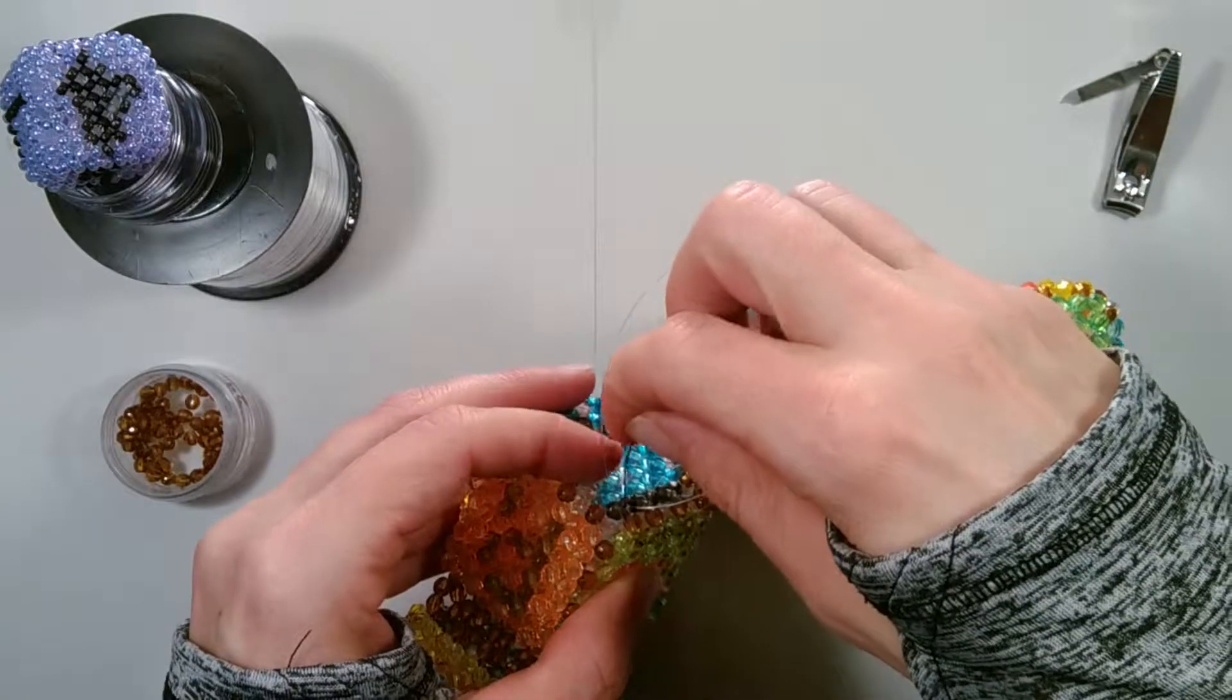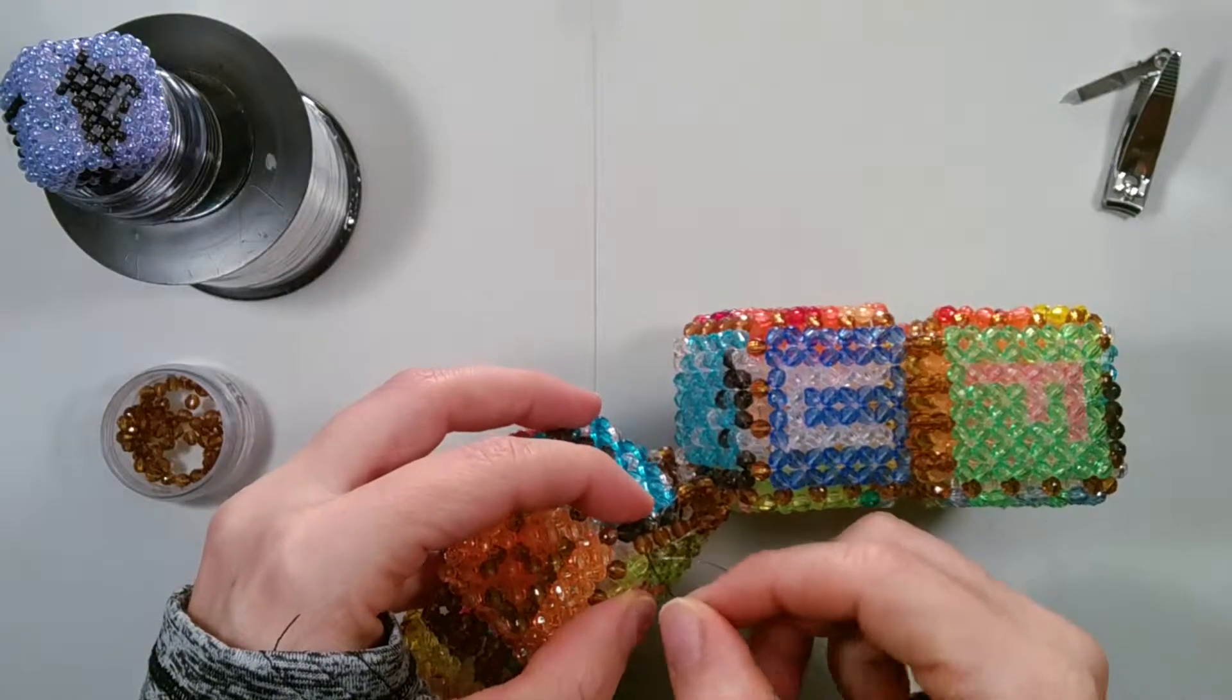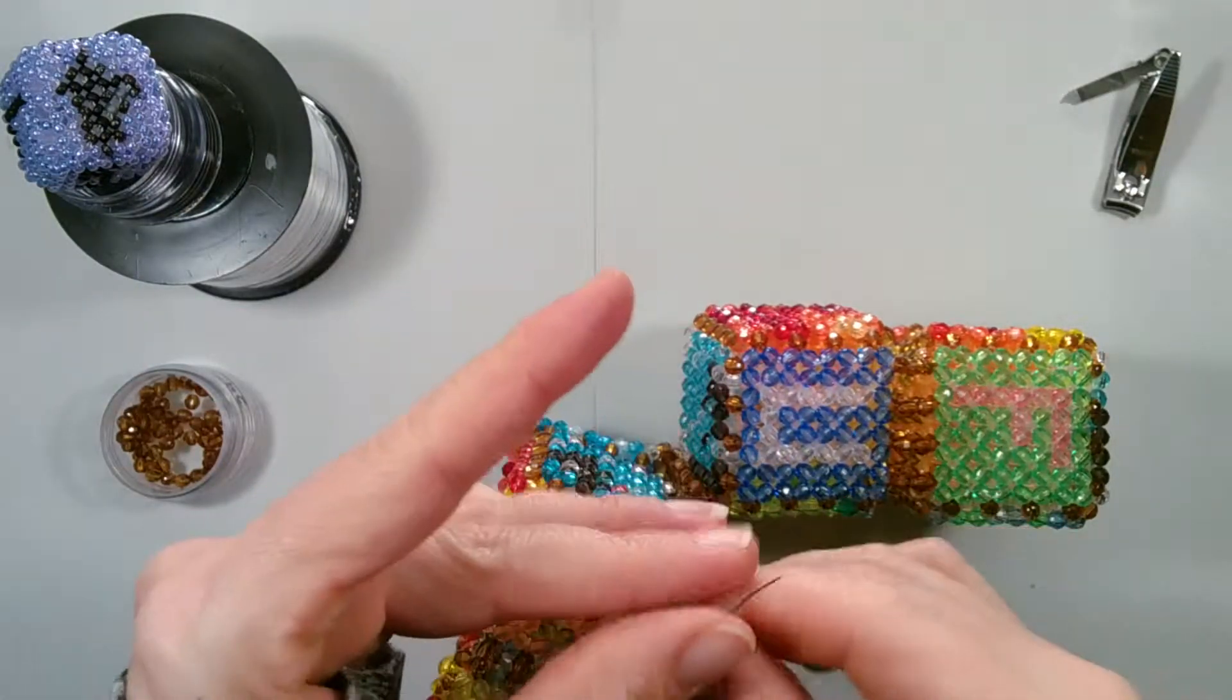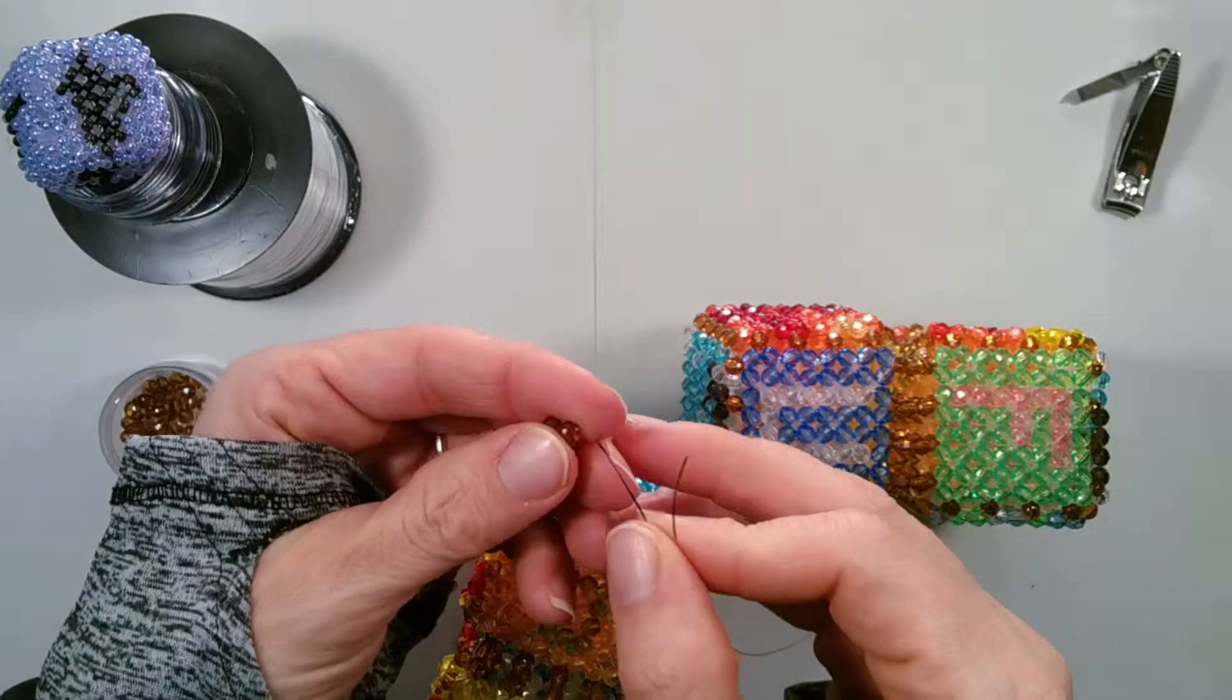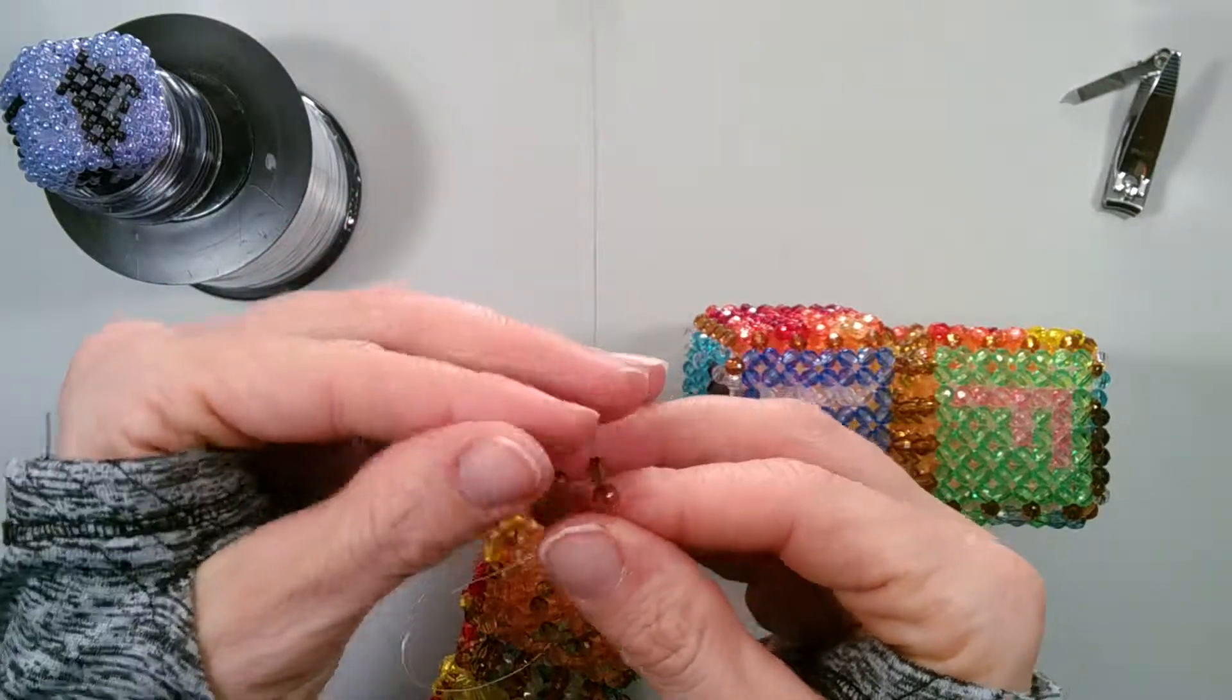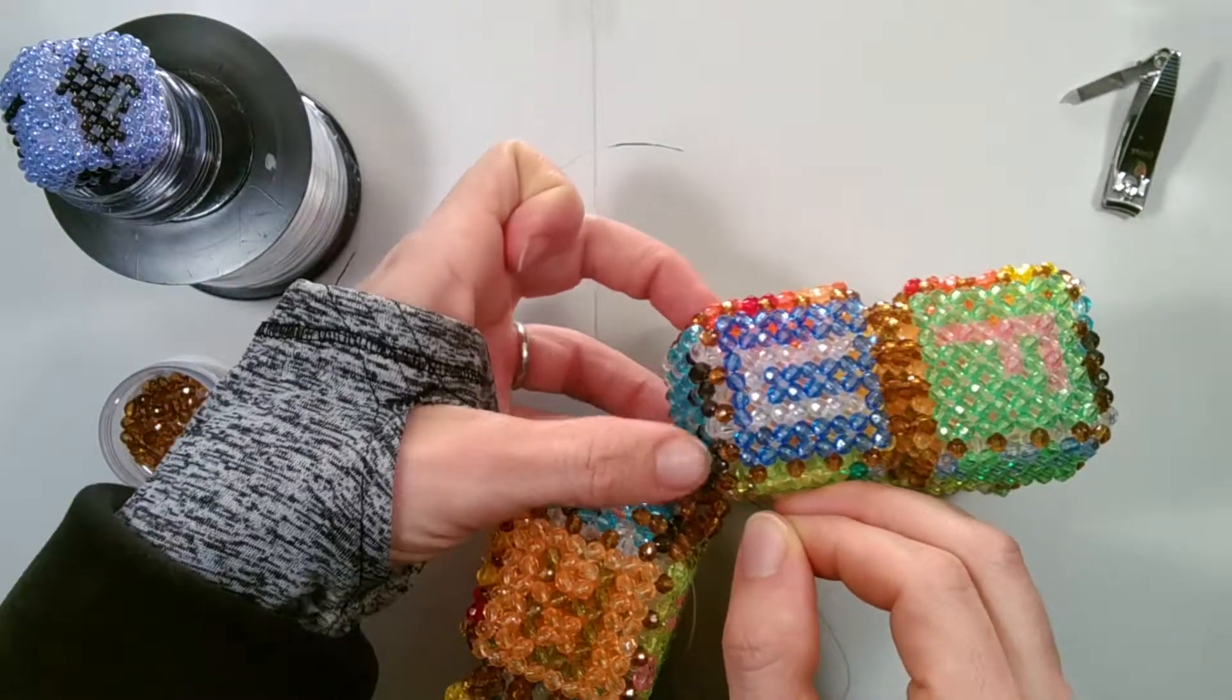Then we cross our last connection bead. Put two beads on each string. And then we cross the last connection bead on the opposite cube.